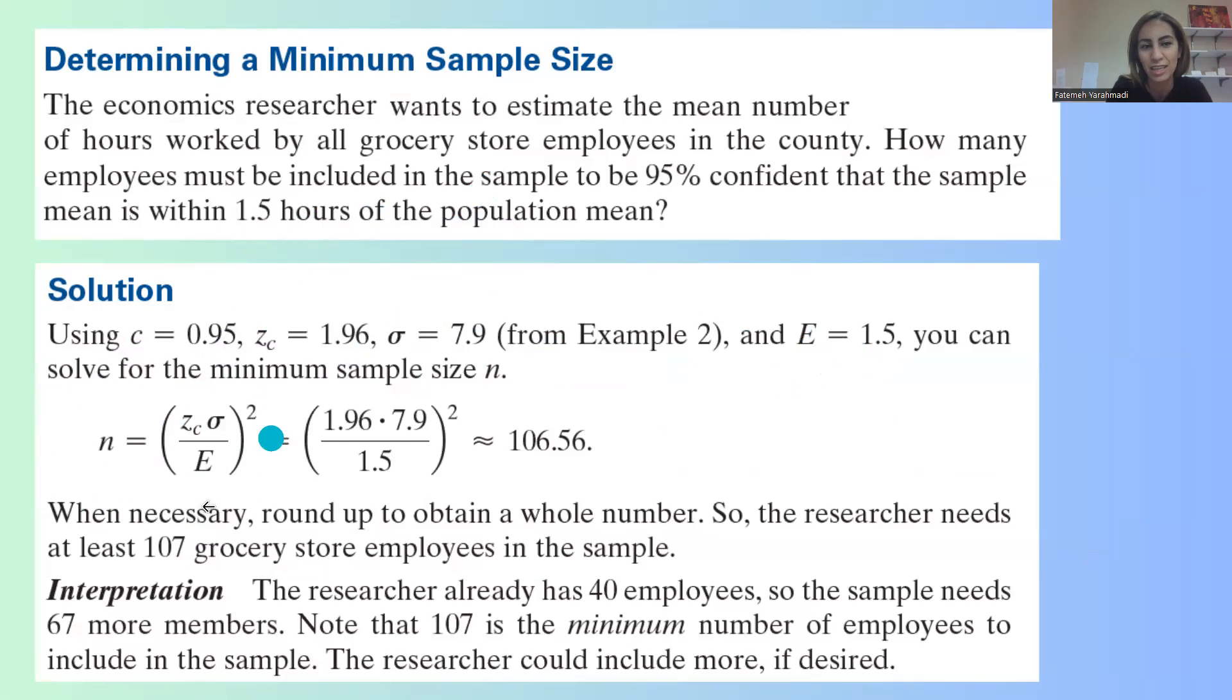So we're going to plug everything into the formula here. zc, 1.96, multiplied by sigma, 7.9, divided by e, which is 1.5, raised to the second power. It's approximately 106.56.